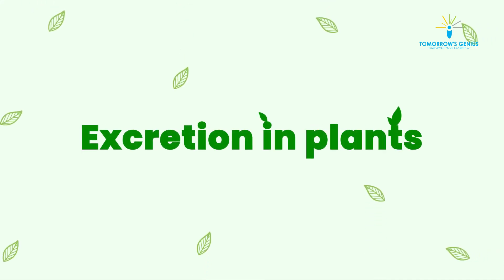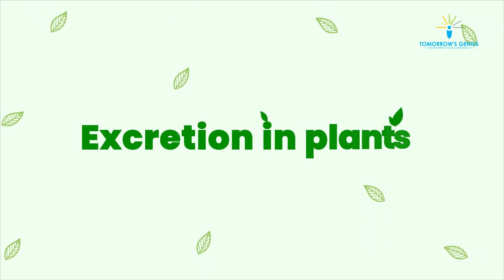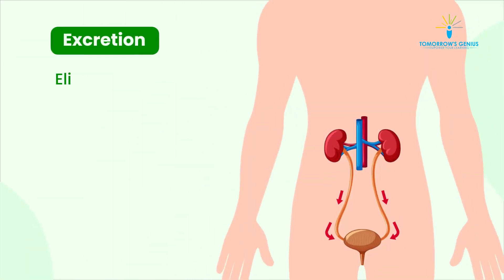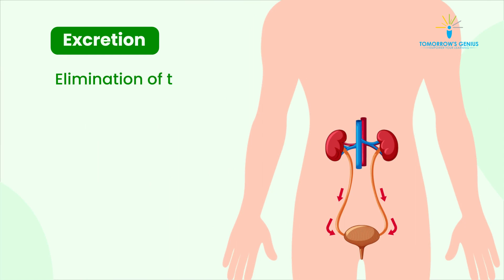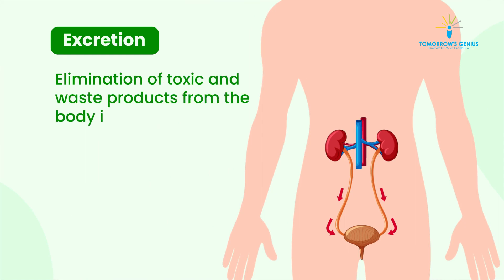Excretion in Plants. The elimination of toxic and waste products from the body is called excretion.